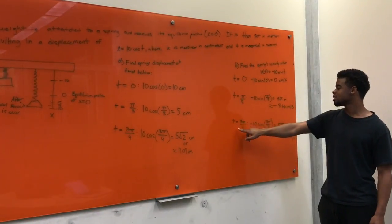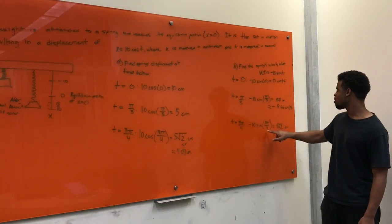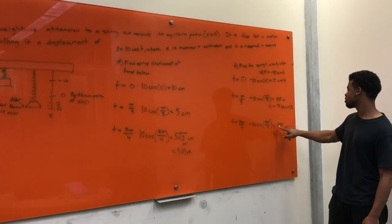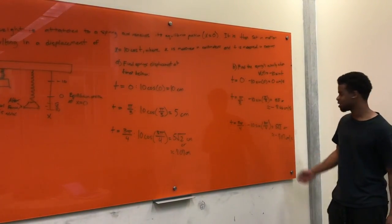For the third one, we got t equals to three pi over four, which equals to negative 10 sine of three pi over four, and that equals to negative five square root of two, or negative 7.07 centimeters per second.